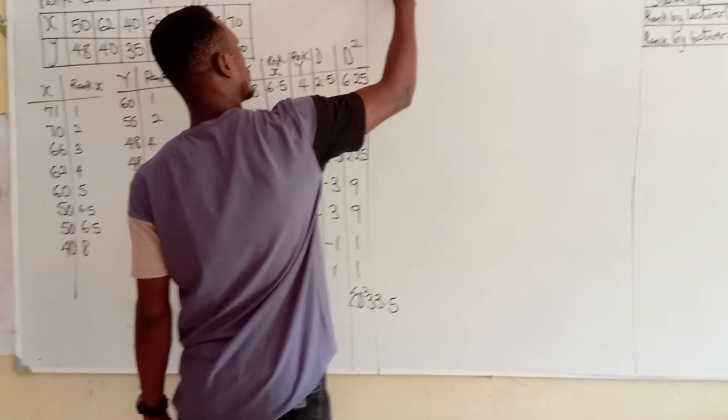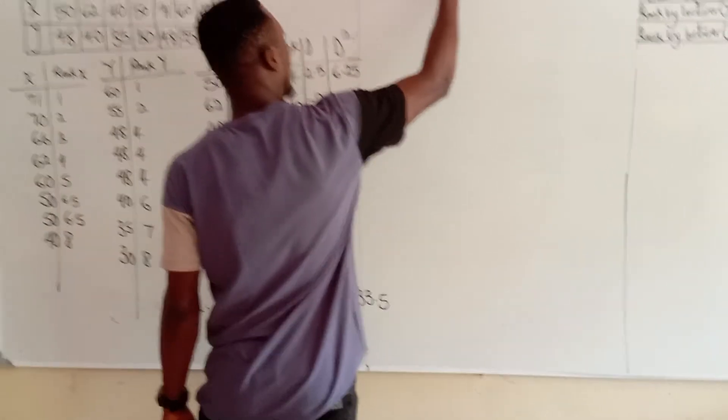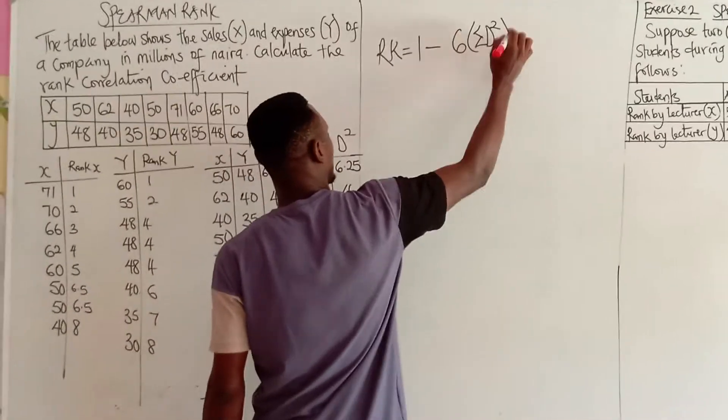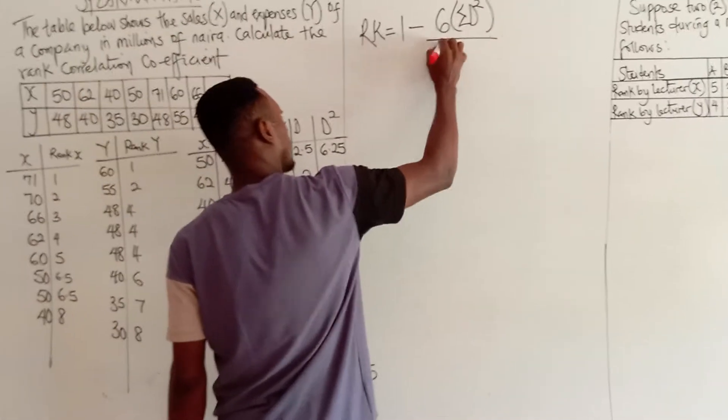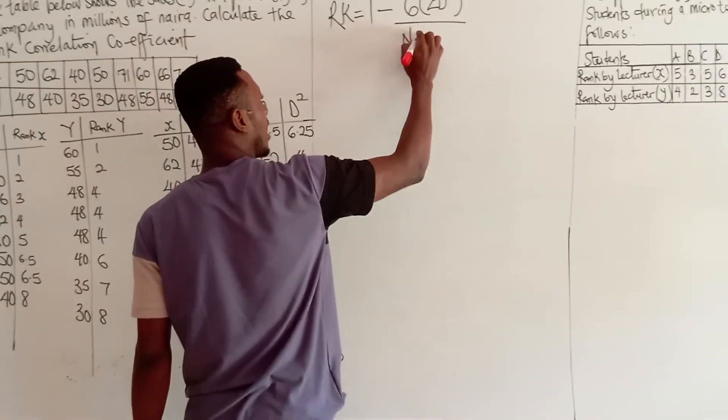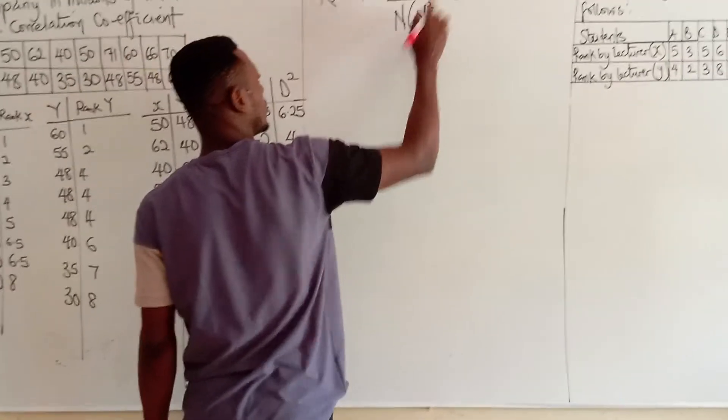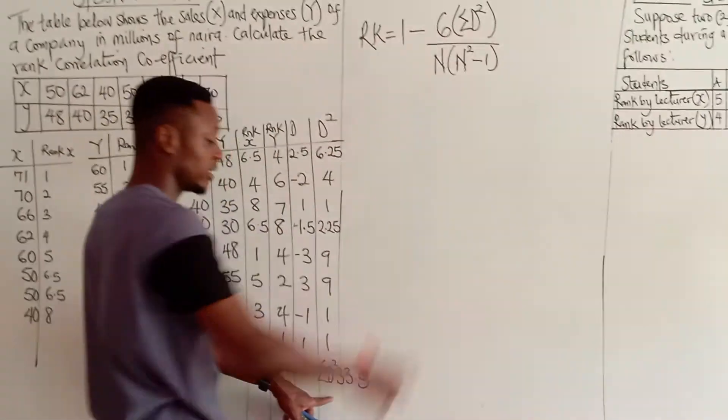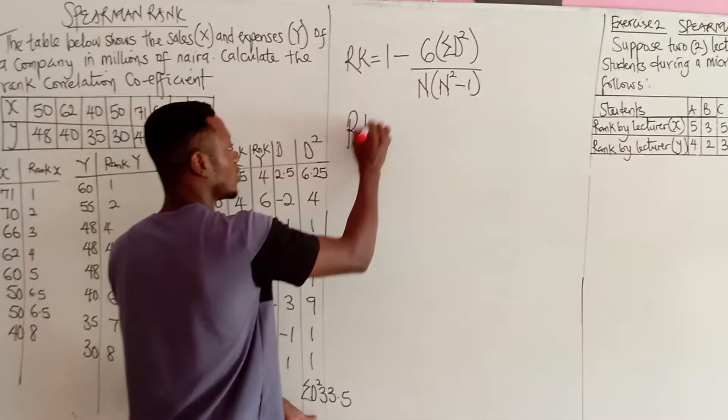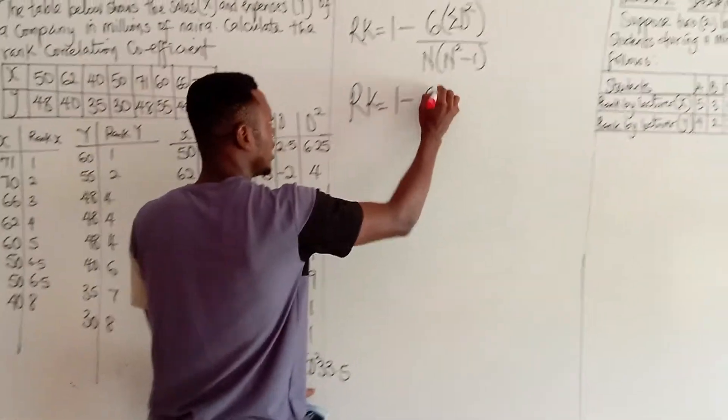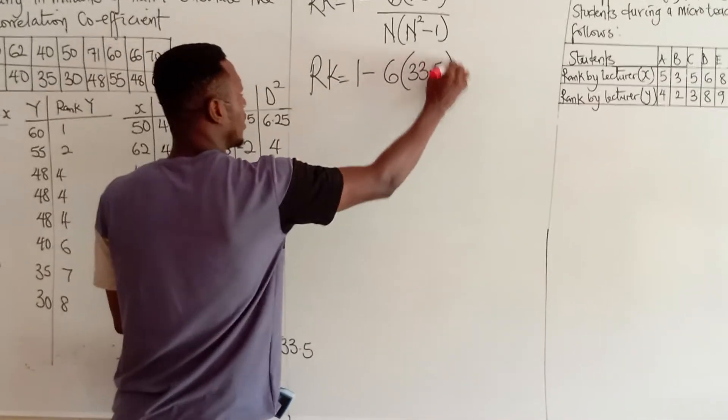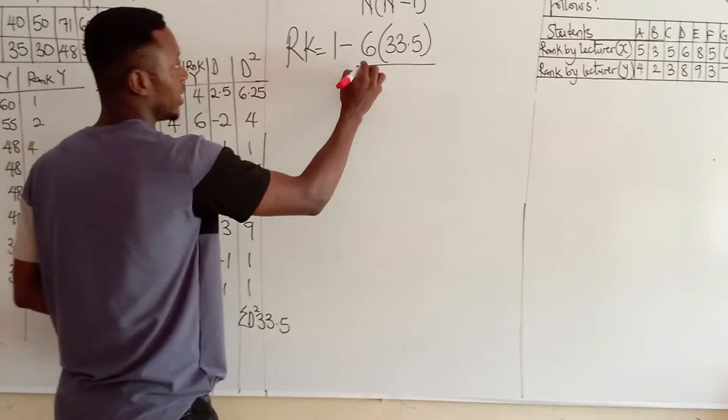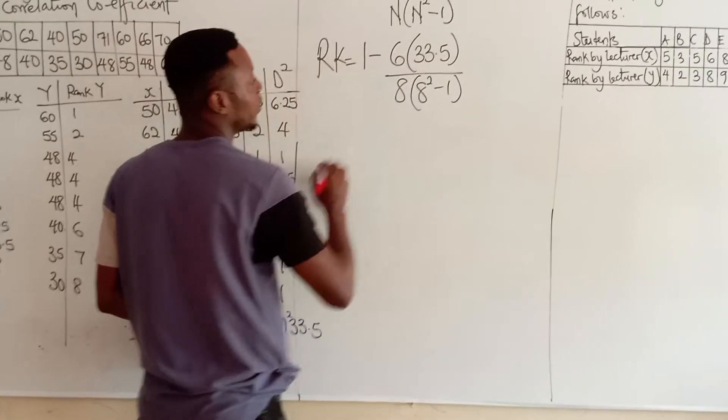Now, it brings us to our formula, which is rank is equals to 1 minus 6 summation, open bracket, D square, divided by number. That is the total number of data that we have. Open bracket multiplied by the number square minus 1. Now, 1, 1, 6 are constants in our formula. Summation D squared is 33.5. So, this will bring us to rank equals to 1 minus 6, 33.5 square. Well, we've already squared it. Our total number is 8, which gives me 8, 8 squared minus 1.